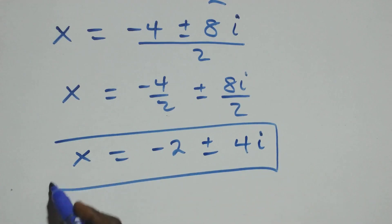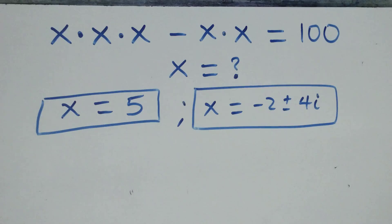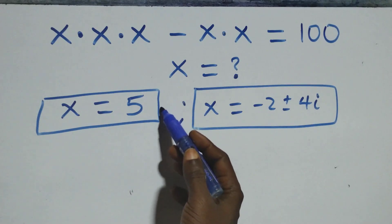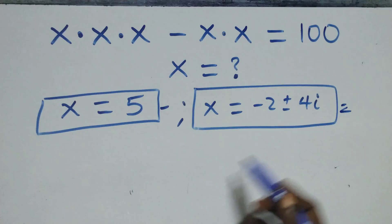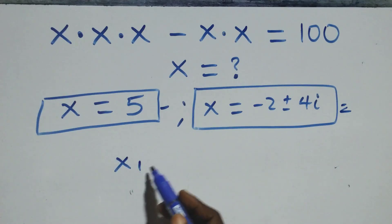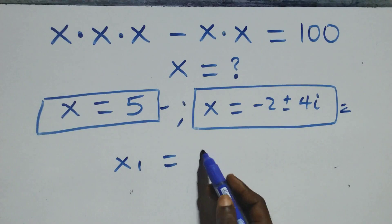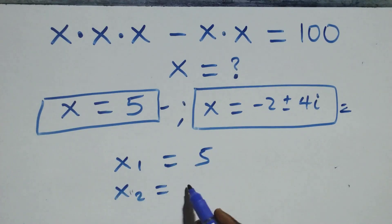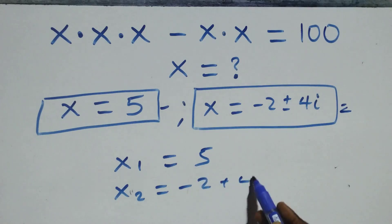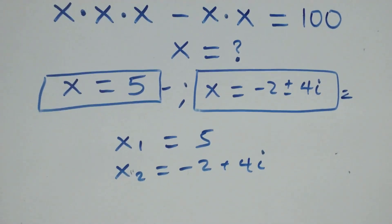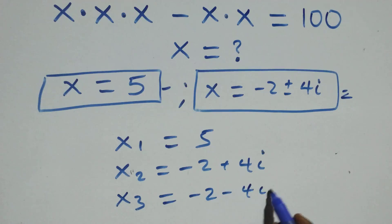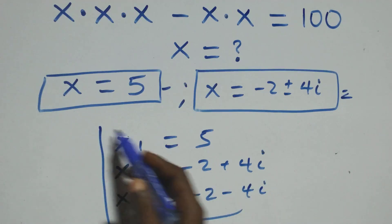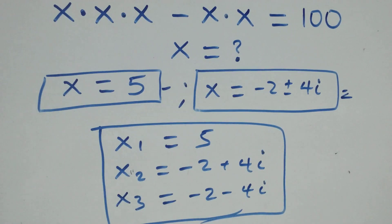We therefore have two complex solutions from the quadratic. Altogether there are three solutions: x1 equals 5, which is the real solution; x2 equals minus 2 plus 4i; and x3 equals minus 2 minus 4i. That makes one real solution and two complex solutions in total.